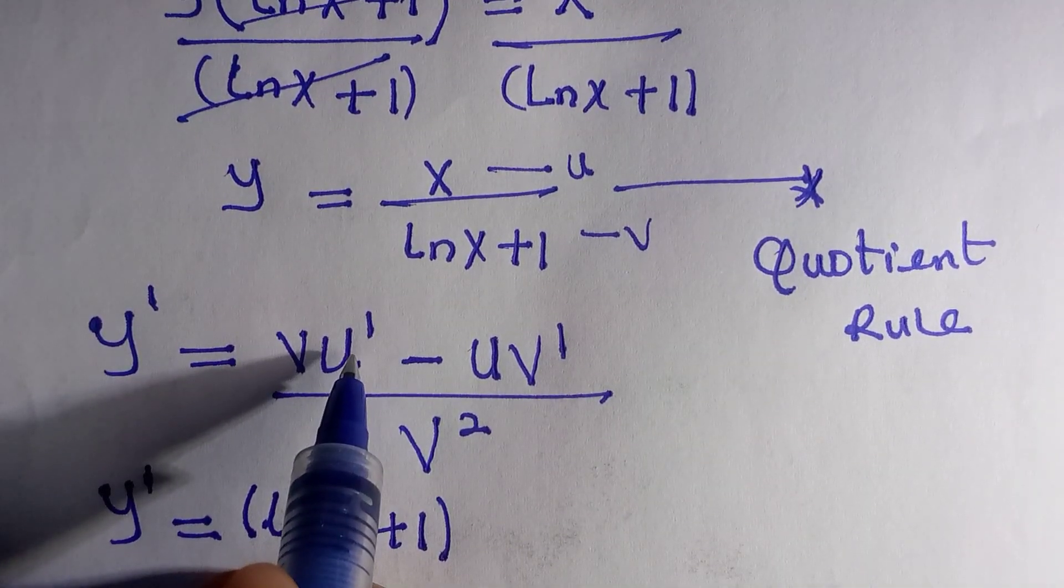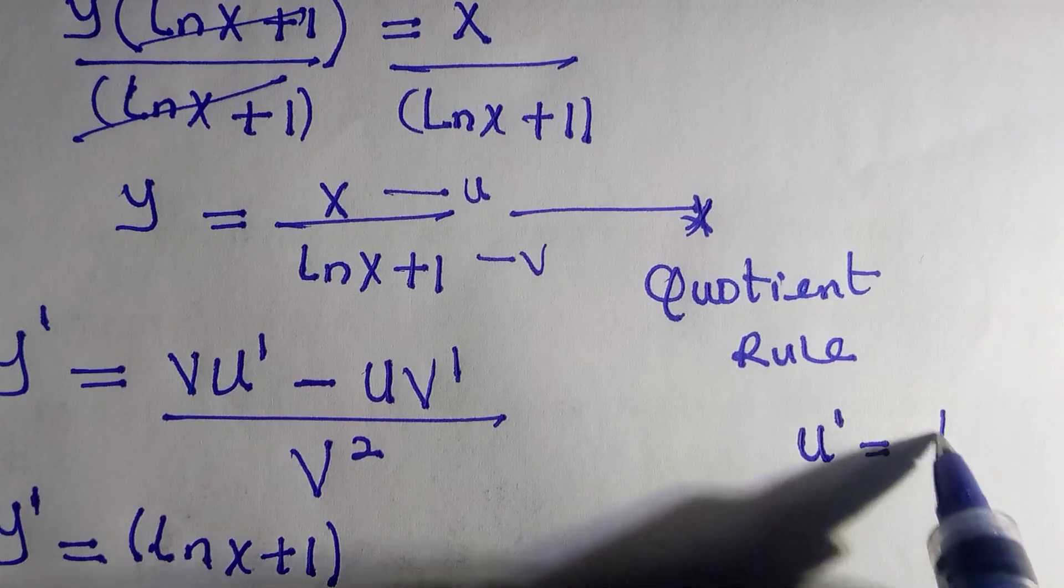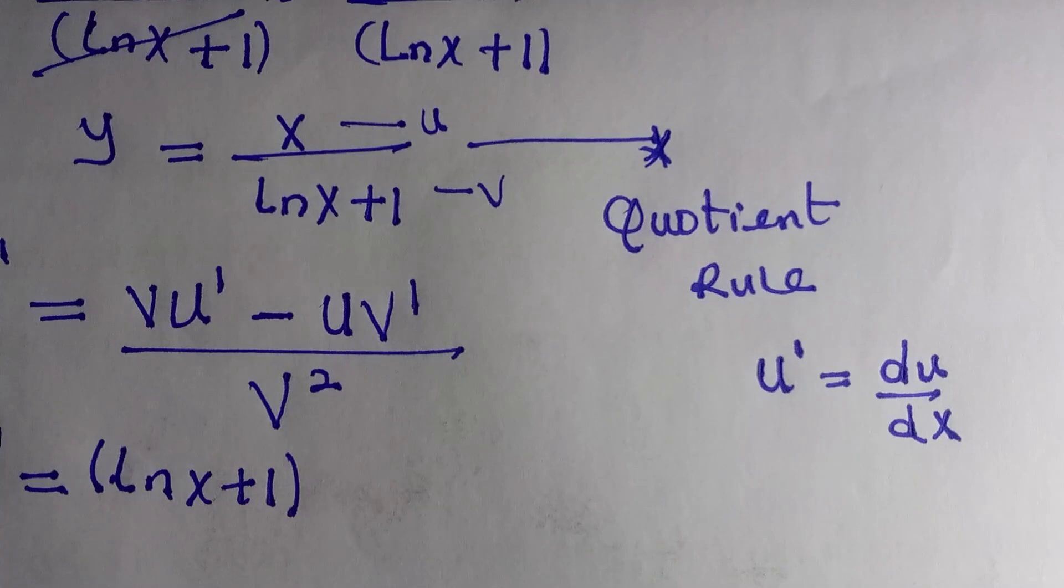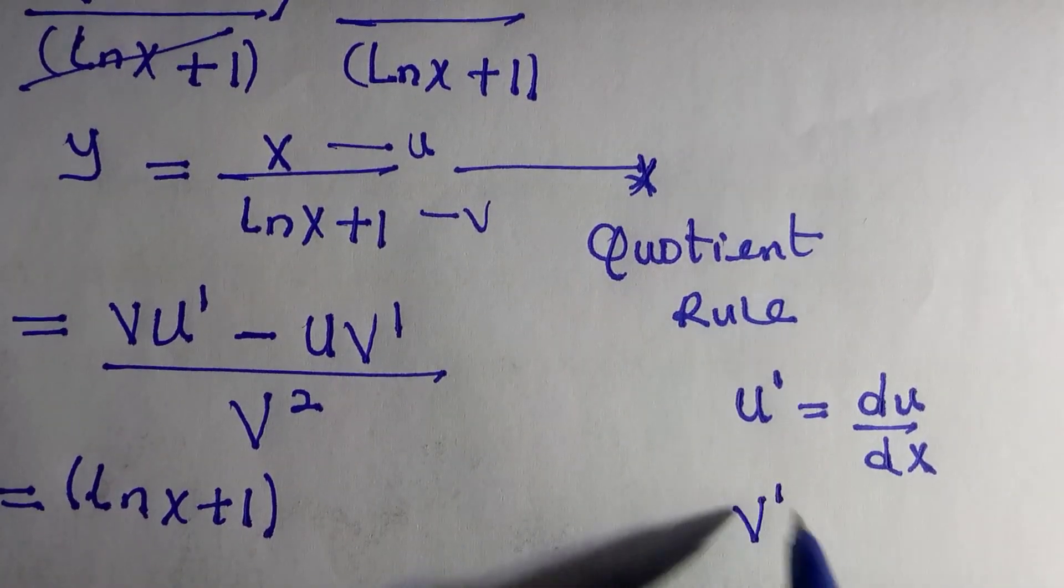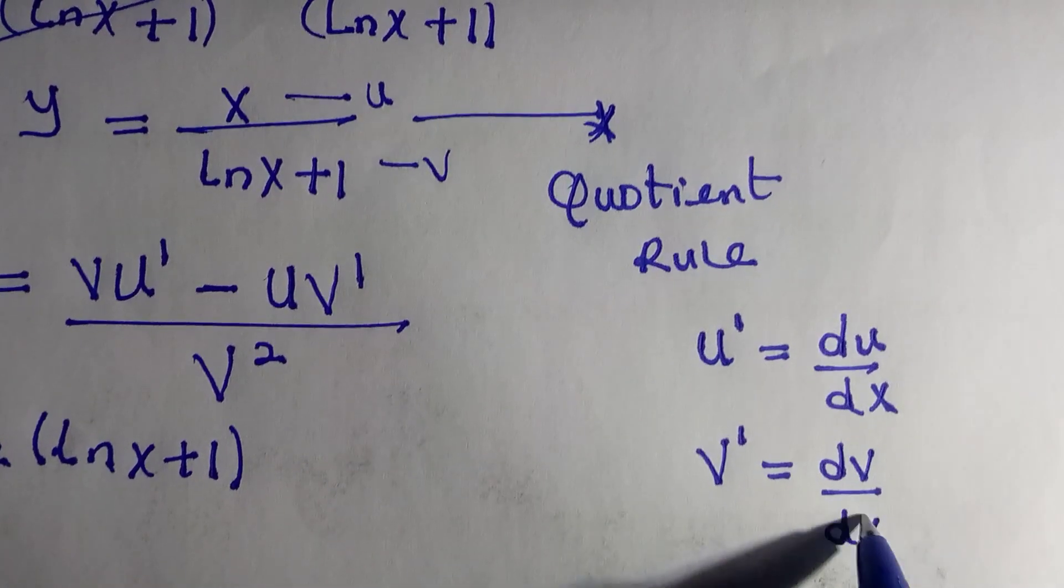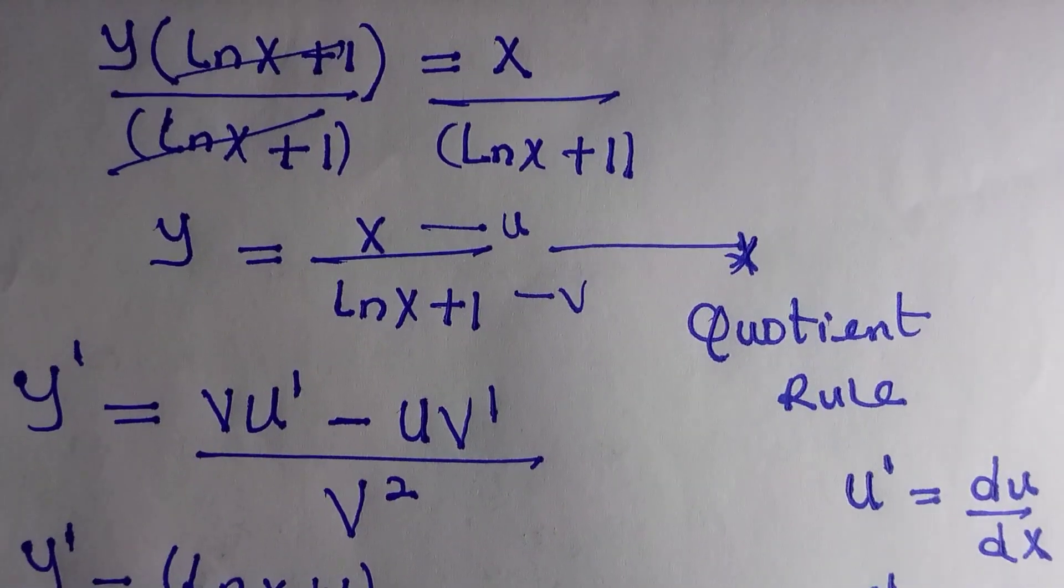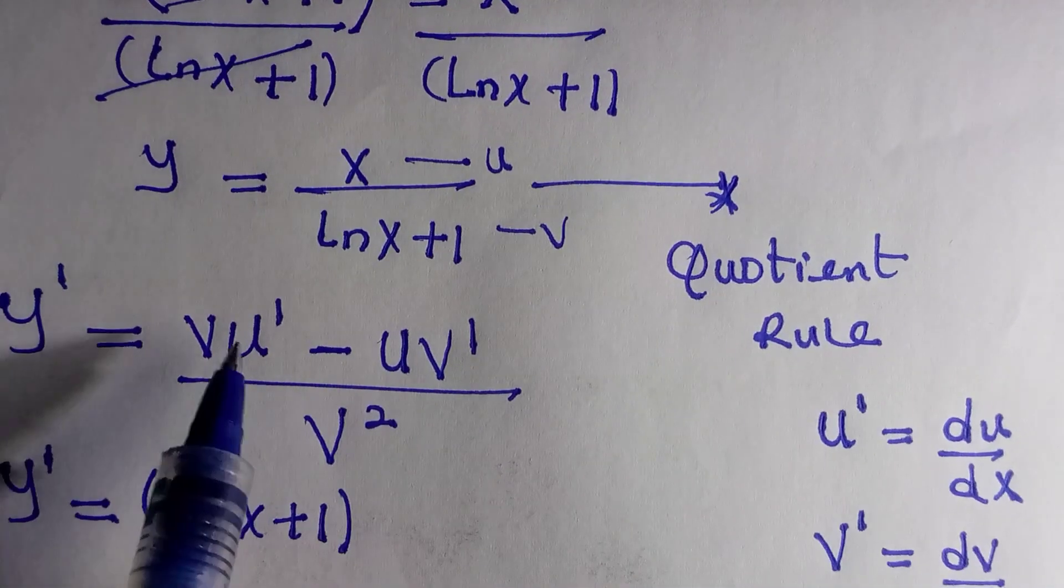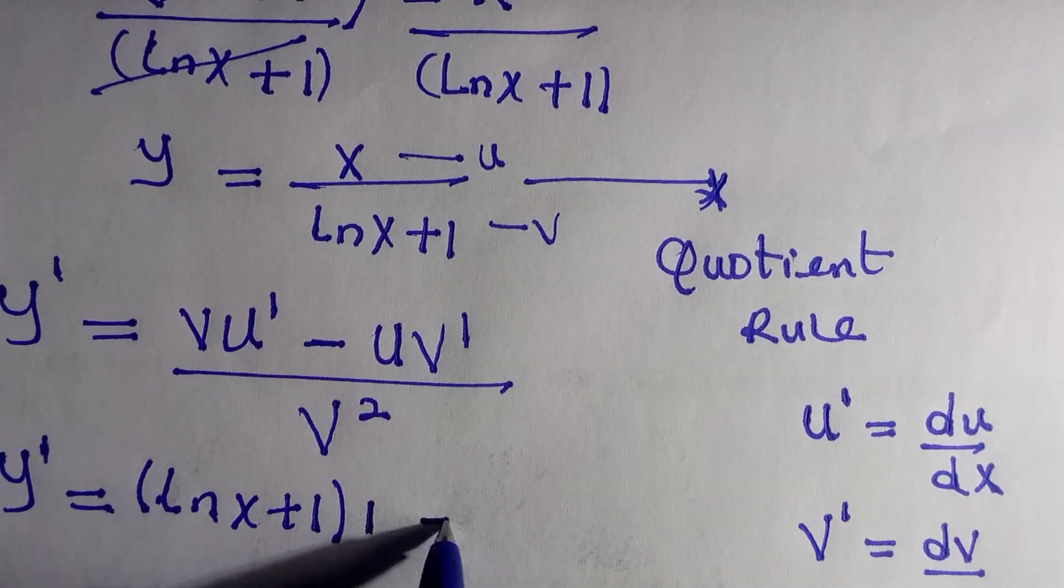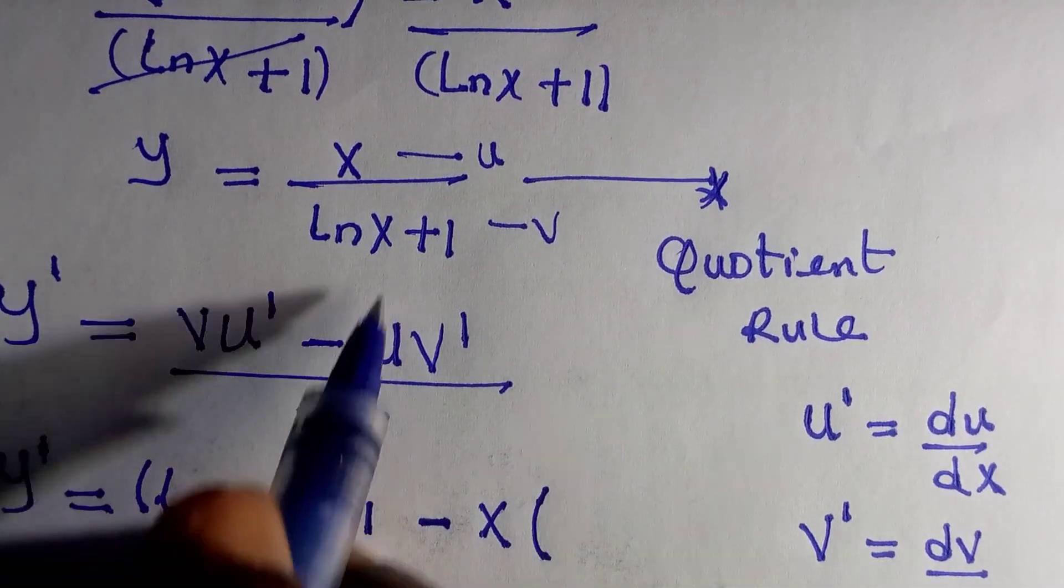And what does this u prime represent? It means we differentiate with respect to x. That is, u prime is du/dx, and likewise v prime means dv/dx. That is differentiating with respect to x where x is independent and u is dependent variable. And by differentiating x, which is our u, we have 1 minus, then u as well is x bracket. v prime is we want to differentiate ln x plus 1.